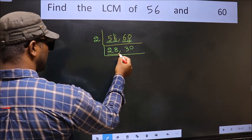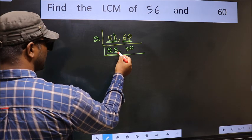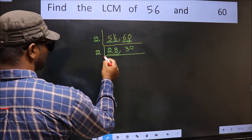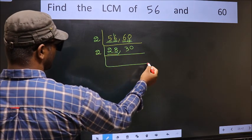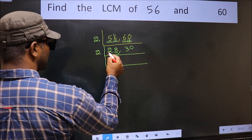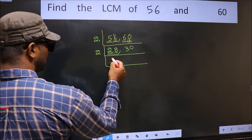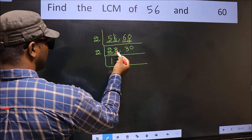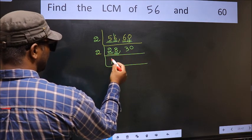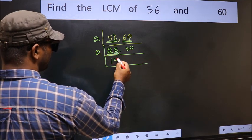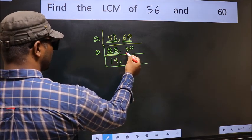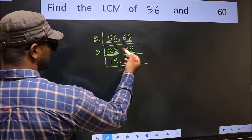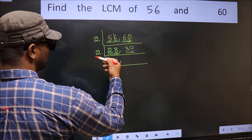Now here we have 28. Last digit 8 — A1 — so take 2. First number is 2. When do we get 2 in the 2 table? 2, 1 is 2. The other number is 8. When do we get 8 in the 2 table? 2, 4 is 8. Now the other number is 30. Last digit 0, so this is divisible by 2.